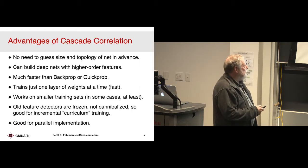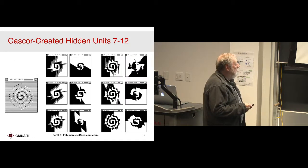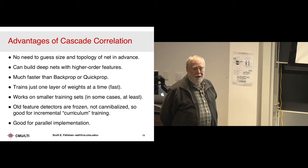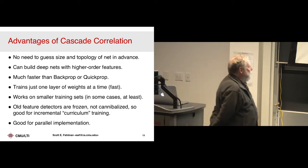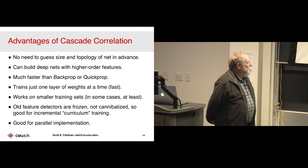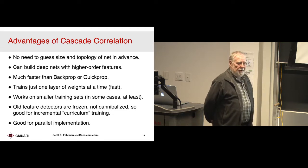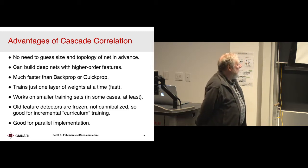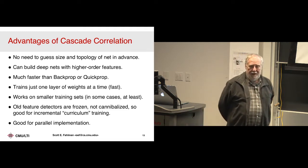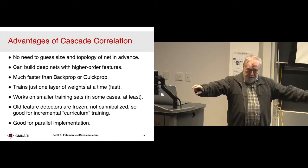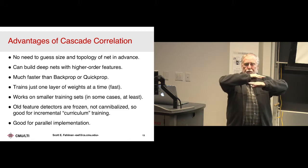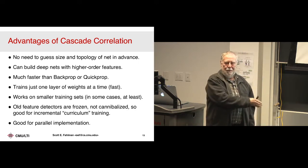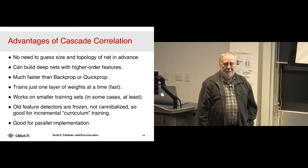That's basic cascade correlation. The advantages: no need to guess the size and topology of the network in advance. It looks at the problem, figures out what it wants to do. It can build deep nets with higher-order features. It's much faster than BackProp or QuickProp — factor of 5, 10, 50, 100 depending on the problem. Trains just one layer of weights at a time. No vanishing gradients as you go back through the thing. No moving targets. One layer of weights at a time — that's a very fast process.